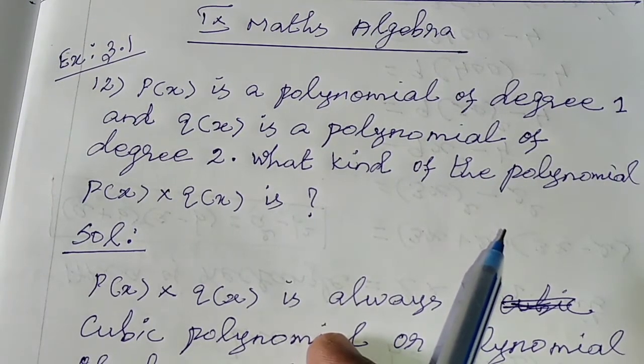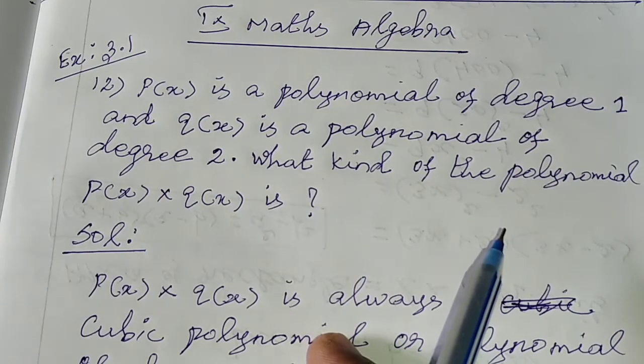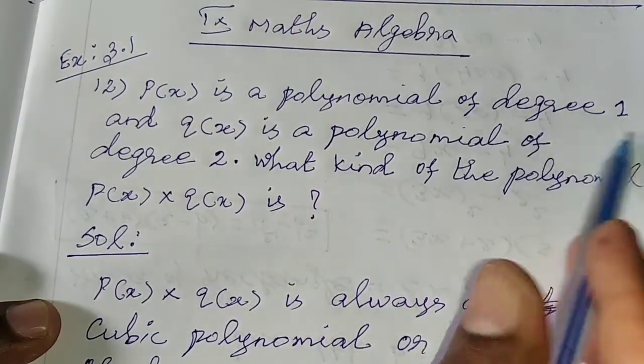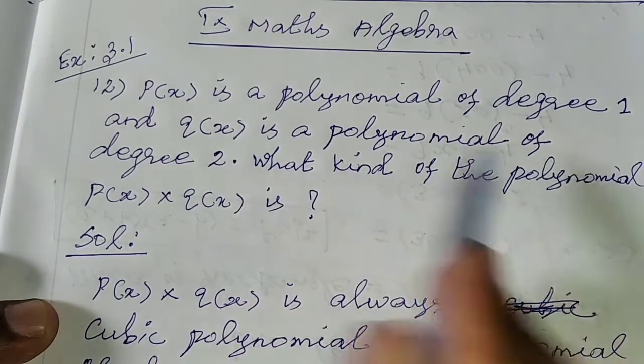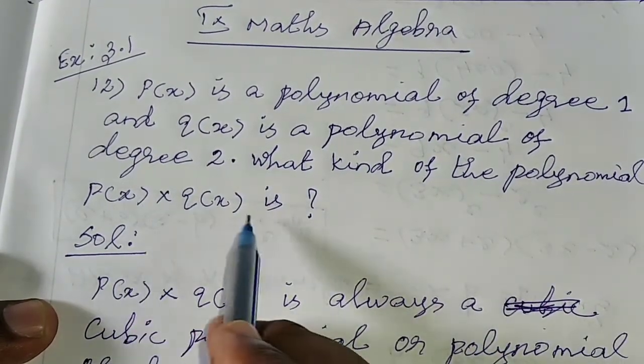Dear students, in this video we are watching 9th math algebra exercise 3.1 sum number 12. See the question: P of x is a polynomial of degree 1 and Q of x is a polynomial of degree 2. What kind of polynomial is P of x times Q of x?